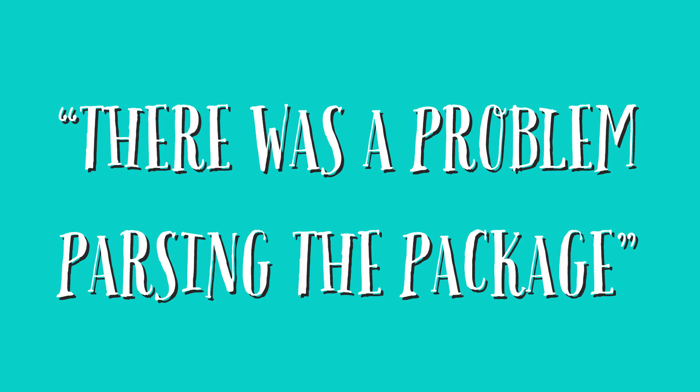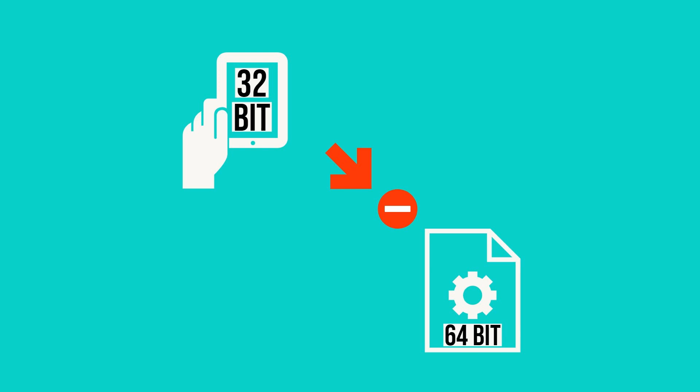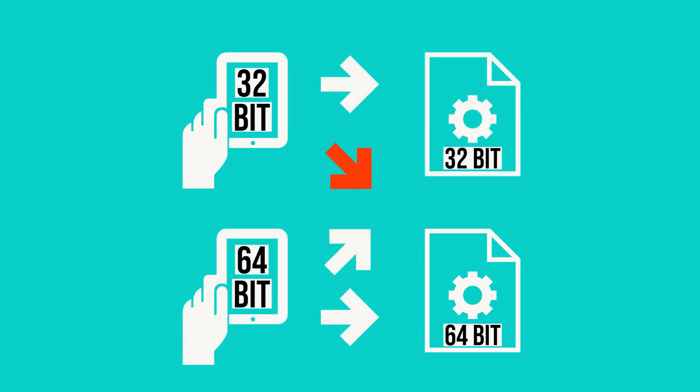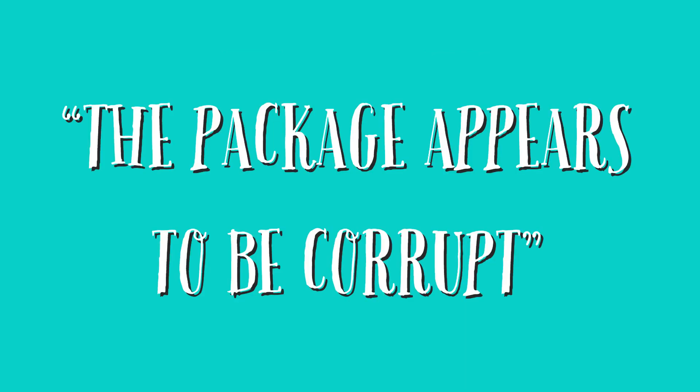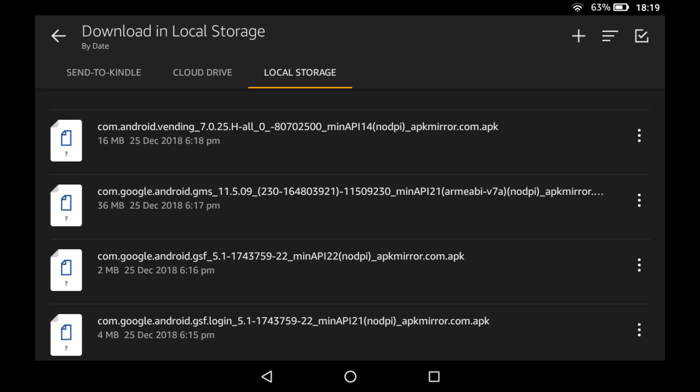Two common errors result from problems at the point of downloading. Where we see an error suggesting there was a problem parsing the package, this typically highlights a problem arising from trying to install 64-bit APK files on a 32-bit device — the 32-bit tablet is unable to determine how to handle a file designed for a 64-bit device. You should ensure at the point of downloading that your APK file is suitable for the specifications of your Fire device. When advised that the package appears to be corrupt, this typically signifies that the original APK download was either incomplete or corrupted — you should delete the file downloaded and return to the web to download an entirely fresh copy, then use the new copy to re-attempt installation.